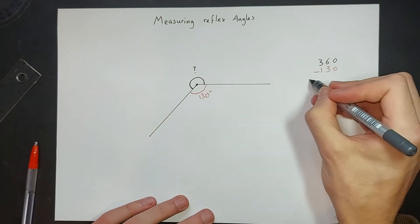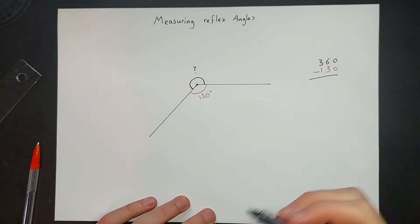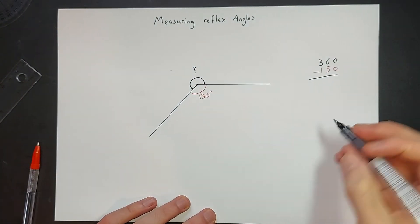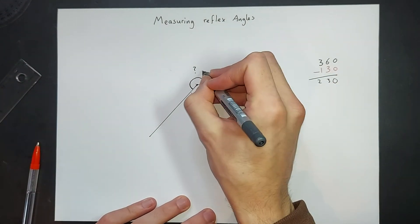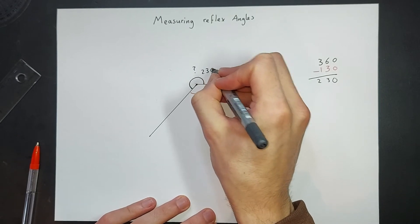So we're going to do 360, take away that 130 to work out this reflex angle. So 0 take away 0. So that means this angle would be 230.